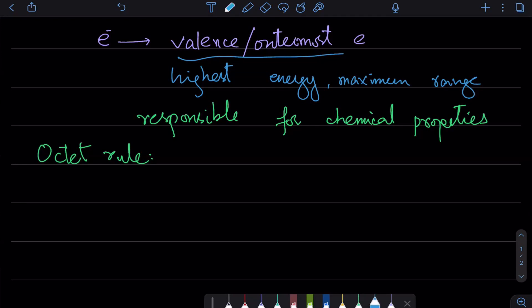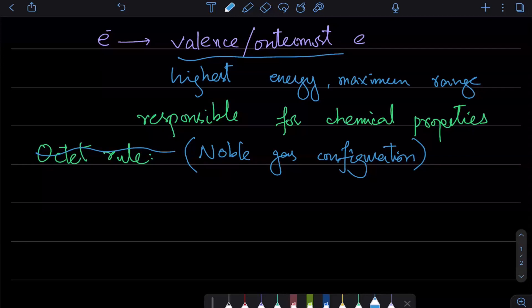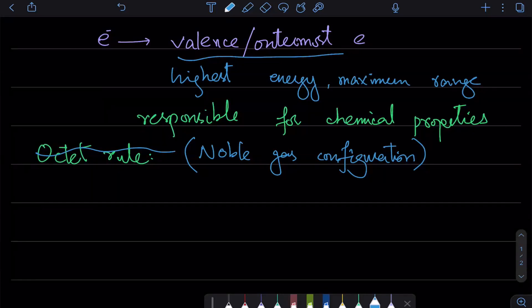Now, if we have to understand this octet rule, we should call it noble gas configuration. Because all atoms try to be like noble gases. In the case of helium, it has 2 in the last shell, which is in the first period in the periodic table. In the second shell, we have neon. In the second period, there is neon with 8 in the last shell. In the third period, you have argon with also 8 in the last shell. And that is why they all try to become like noble gases. In the case of helium, they have 2 in the last shell, and in neon and argon, they have 8 in the last shell.